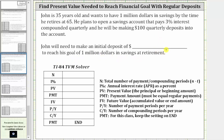We will answer this question using the TVM solver on the TI-84. Let's begin by determining the required information. Capital N is the total number of payment periods. Because he is paying quarterly, capital N is going to be the number of quarters over the 30 years from age 35 to 65, so N is 30 times four — the number of quarters over the 30 years of savings.